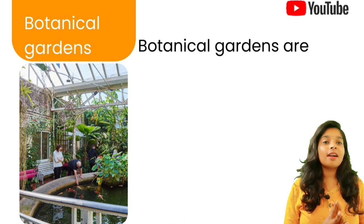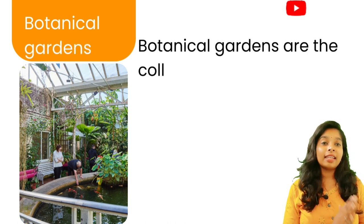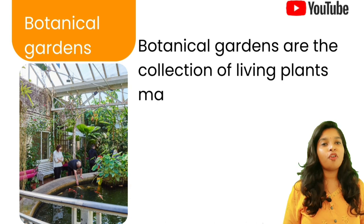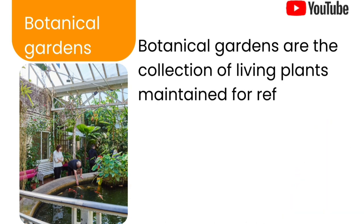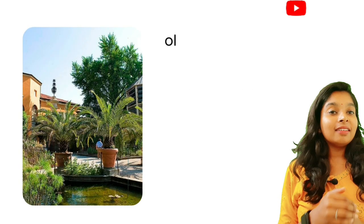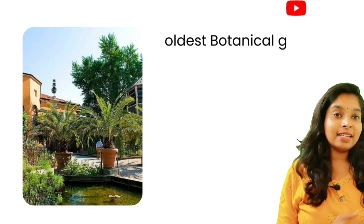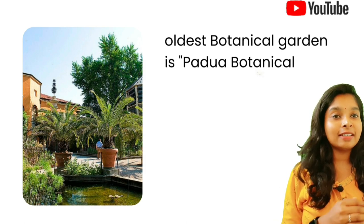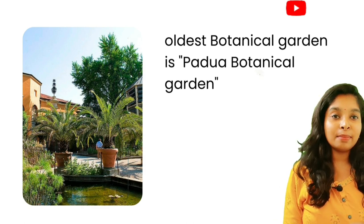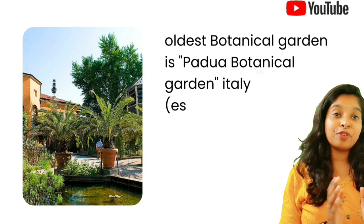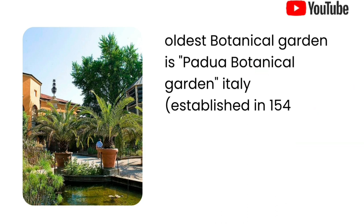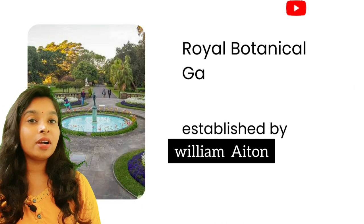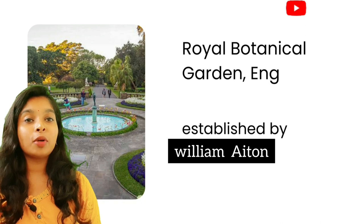Botanical gardens are collections of living plants maintained for reference. The oldest botanical garden is the Padua Botanical Garden, which is located in Italy and was established in the year 1545.